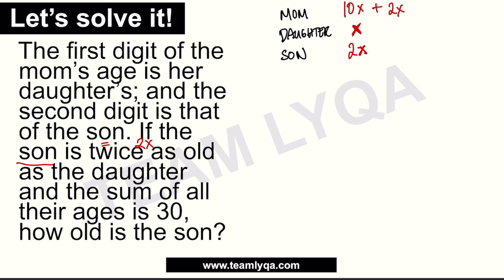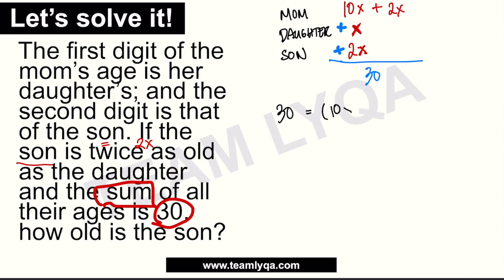Now we have all their ages. Let's go back to the equation. The sum of all their ages is 30. So: 30 equals the mom's age (10x + 2x), plus the daughter's age (x), plus the son's age (2x).